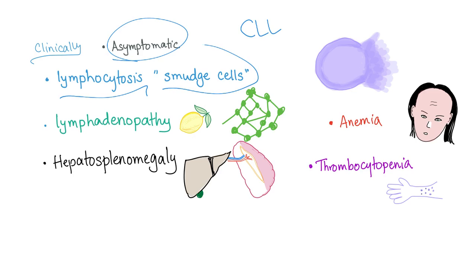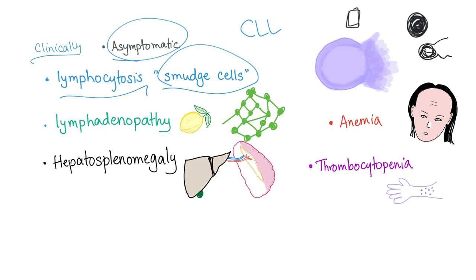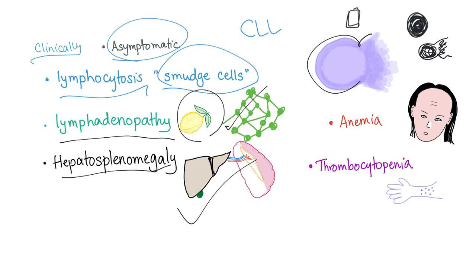You can have lymphocytosis with the famous smudge cells. If you've used Photoshop before, you know exactly what I'm talking about. There is a tool in Photoshop called the smudge tool. If you have a circle and you select the smudge tool, then drag it all over the cell, the cell becomes smudged — this is called a smudge cell, exactly as in Photoshop.